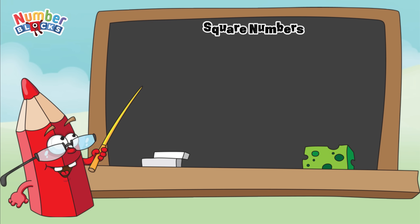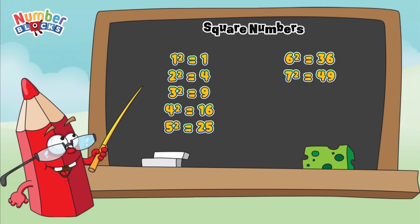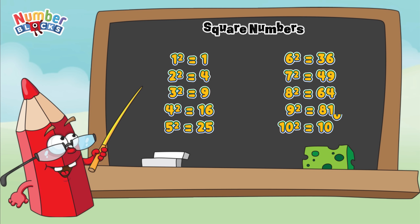Here are some square numbers: 1 squared is equals to 1. 2 squared is equals to 4. 3 squared is equals to 9. 4 squared is equals to 16. 5 squared is equals to 25. 6 squared is equals to 36. 7 squared is equals to 49. 8 squared is equals to 64. 9 squared is equals to 81. 10 squared is equals to 100.